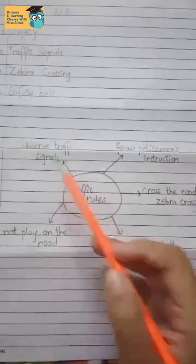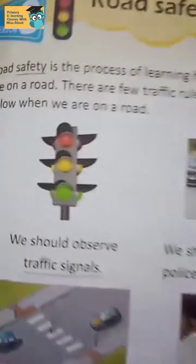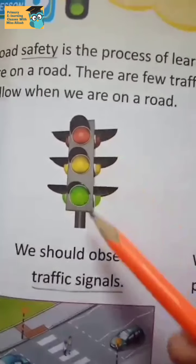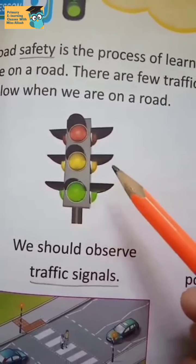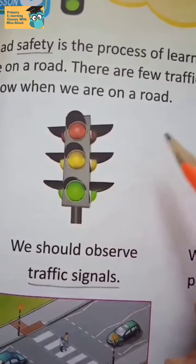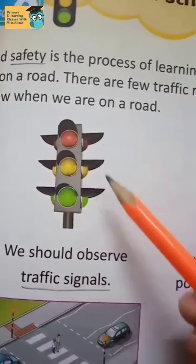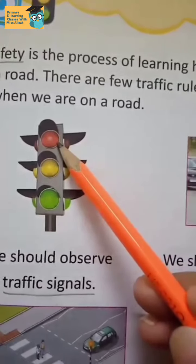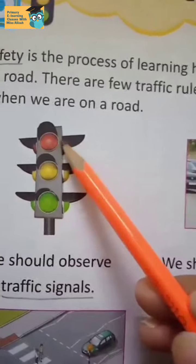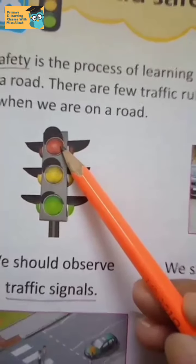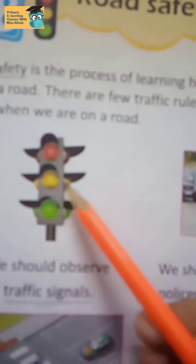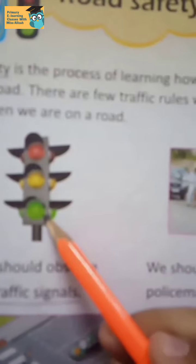The first traffic rule is to observe traffic signals. You should always observe traffic signals. As you can see, this is a traffic signal and it has three different colors of lights. These lights give us different signals. Red light tells us to stop. Yellow light tells us to wait. Green light tells us to go.